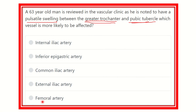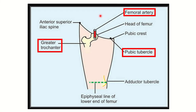We have to find out one of the arteries located between the greater trochanter and pubic tubercle. In this picture we can see the greater trochanter here and the pubic tubercle here. Between the greater trochanter and pubic tubercle there is an artery, and this artery is the femoral artery. So this should be the answer.